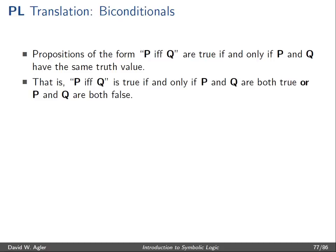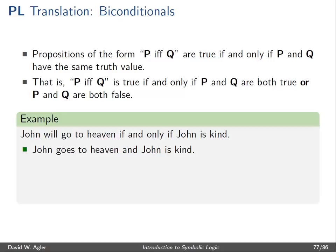In other words, P if and only if Q is true if and only if P and Q are both true, or P and Q are both false. Suppose we want to know the conditions under which 'John will go to heaven if and only if John is kind' is true or false. What this sentence asserts is that on the condition John will go to heaven, then John is kind, and on the condition that John is kind, then John will go to heaven. Essentially, if one condition holds then the other also holds, and if one does not hold then the other does not as well — we can't have one condition or state of affairs without the other.